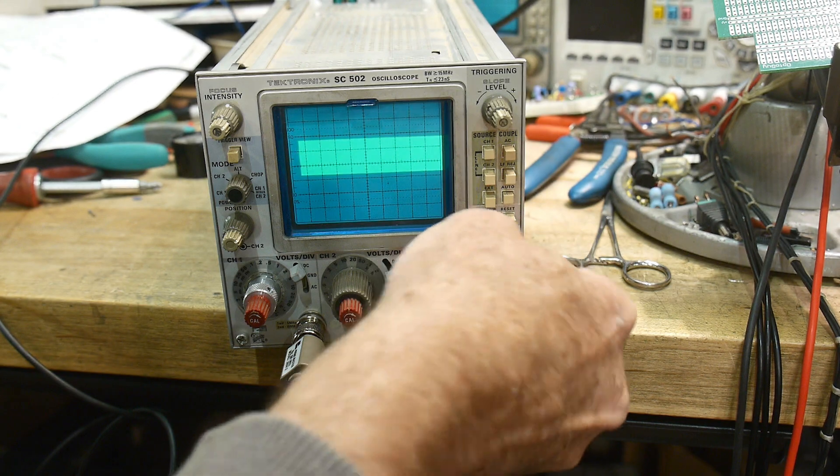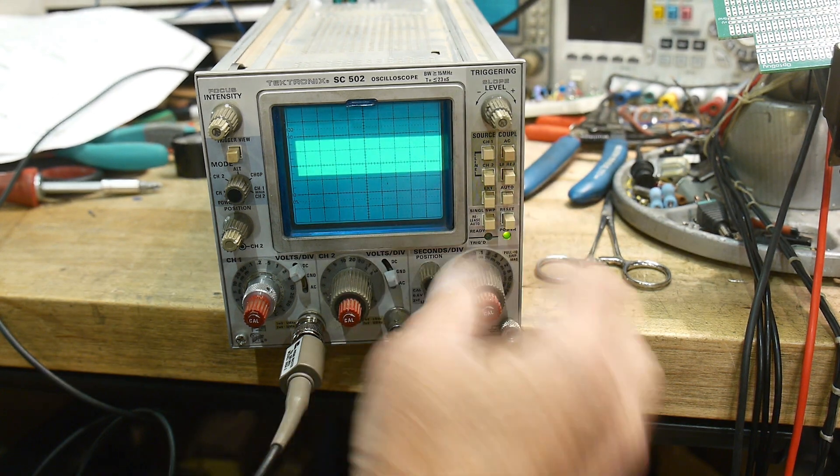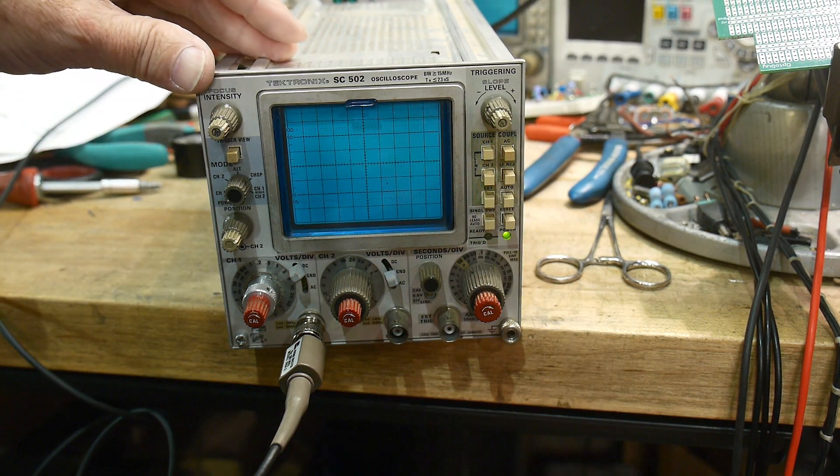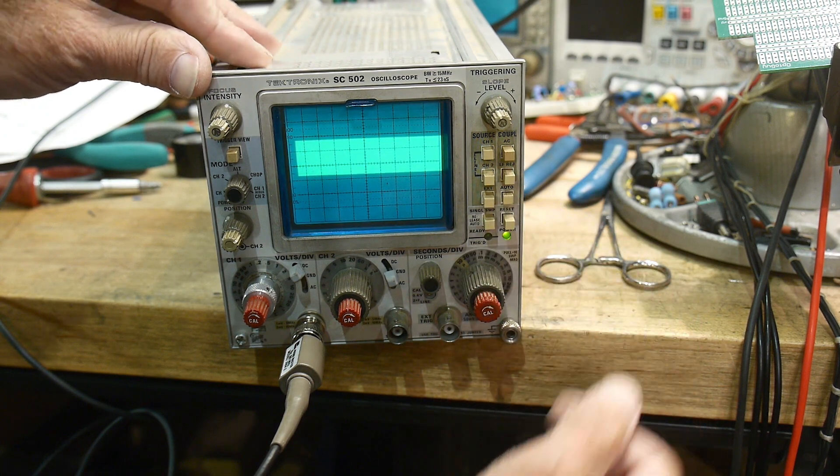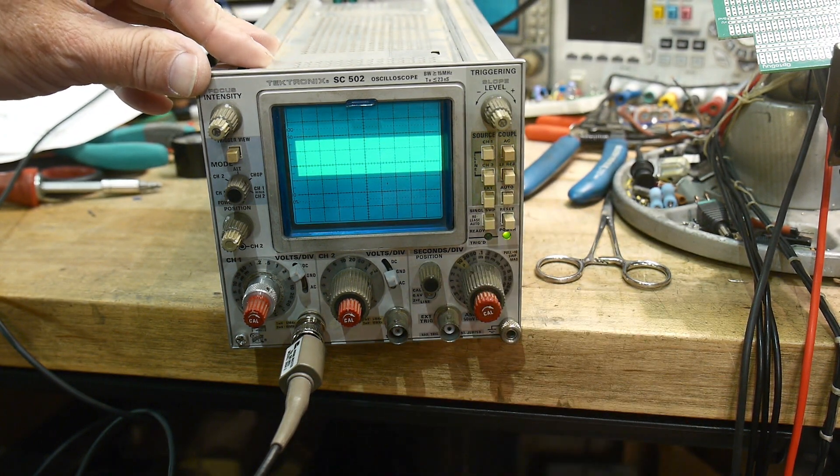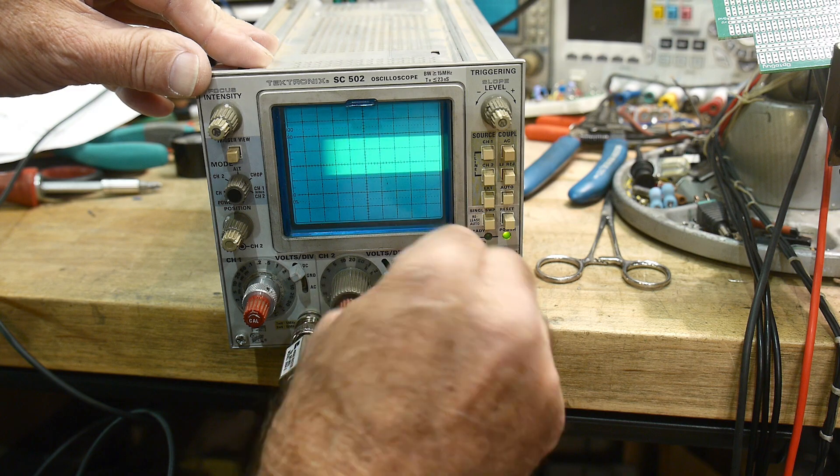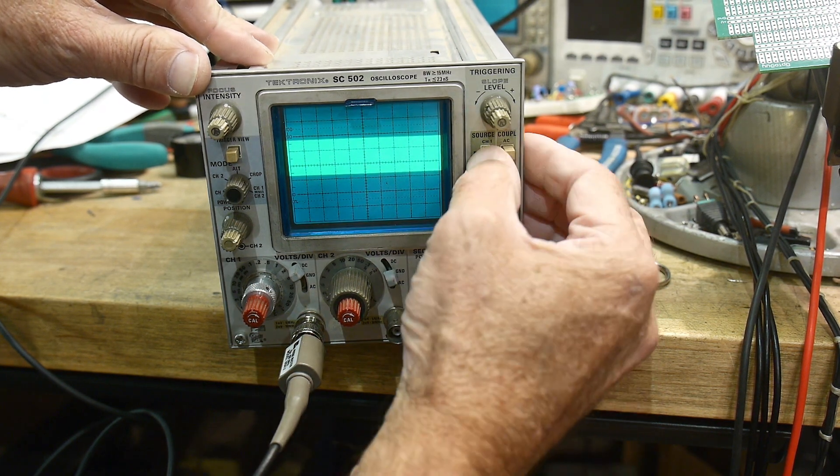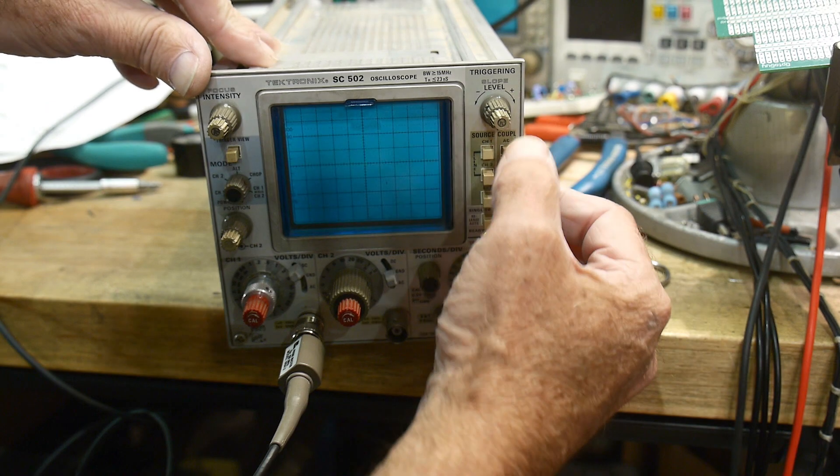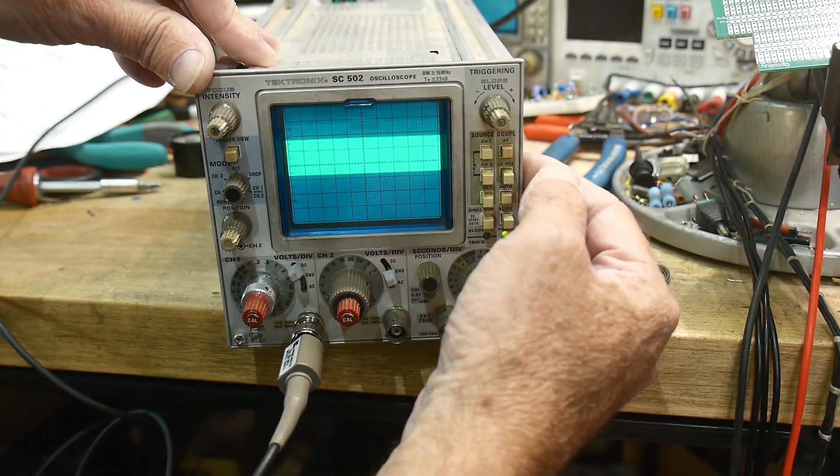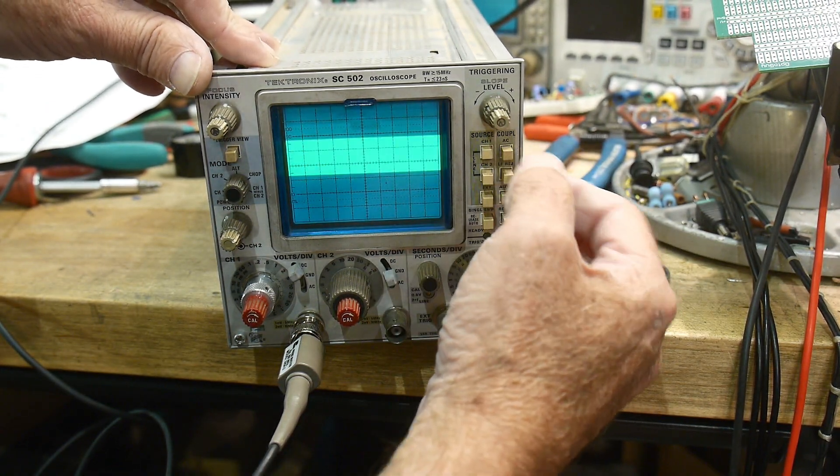Are we seeing something? Oh, there's something. Let's see here. Trigger. Automatic. Trigger position. Where's trigger? Secondary for division. Oh, that's that thing. Why aren't we triggering? Let's see here. Coupling AC.